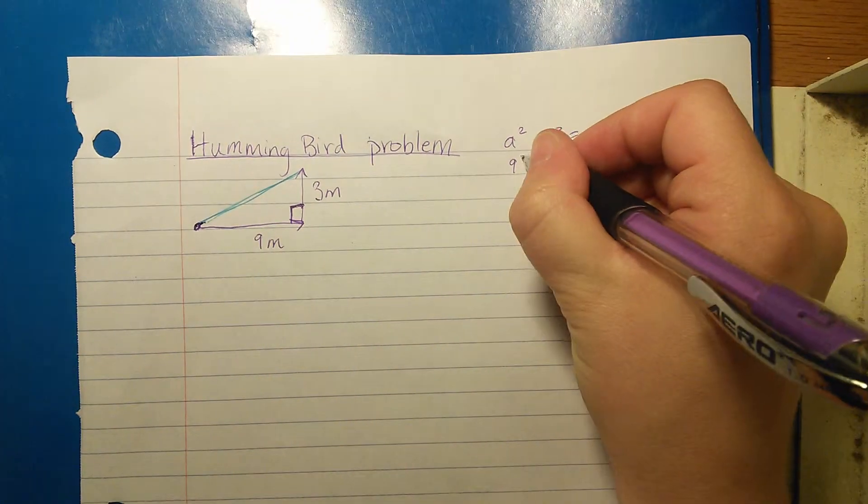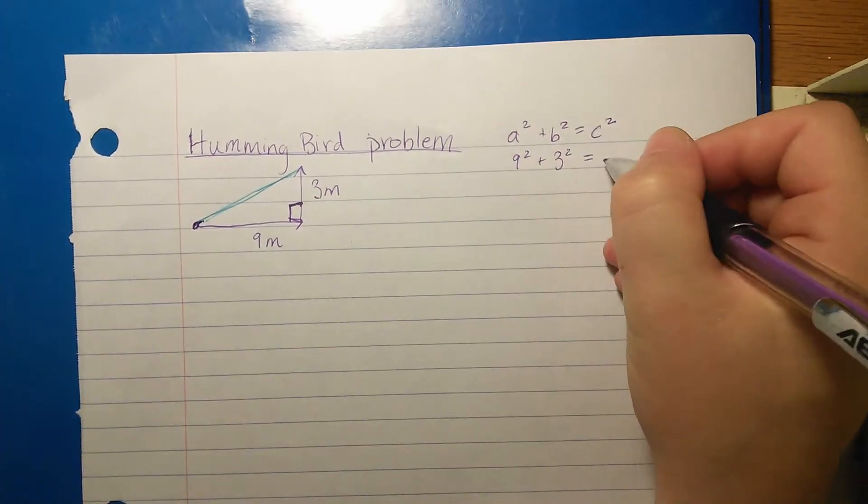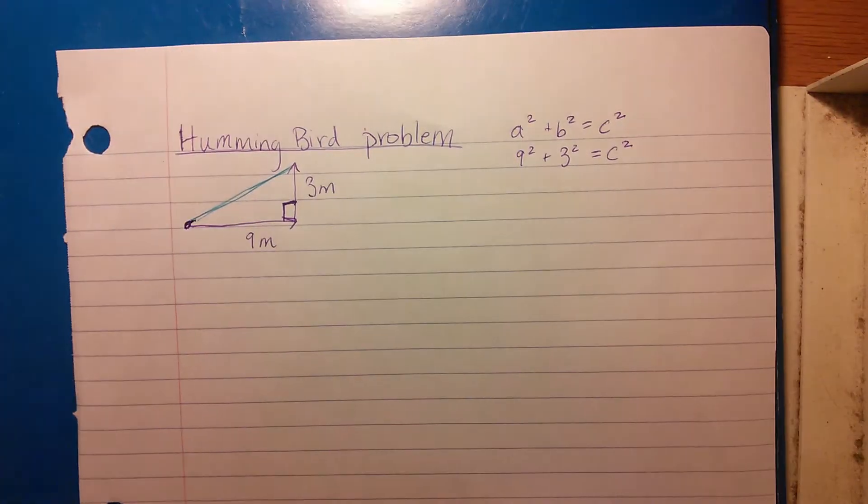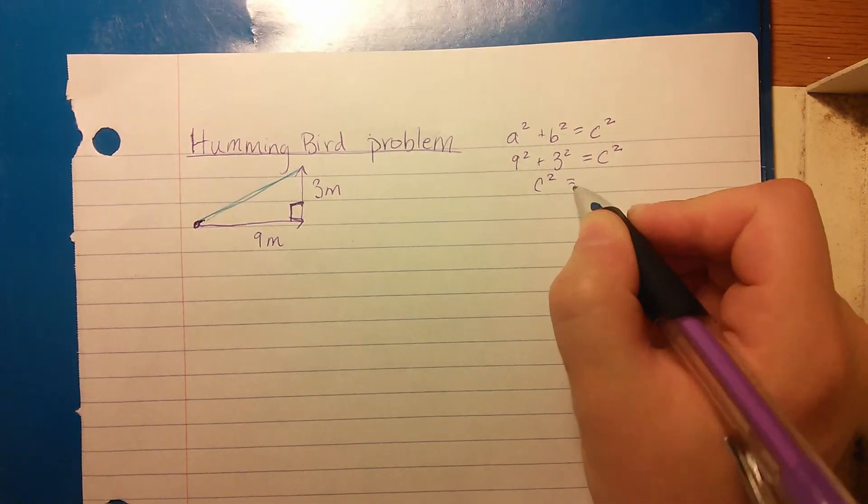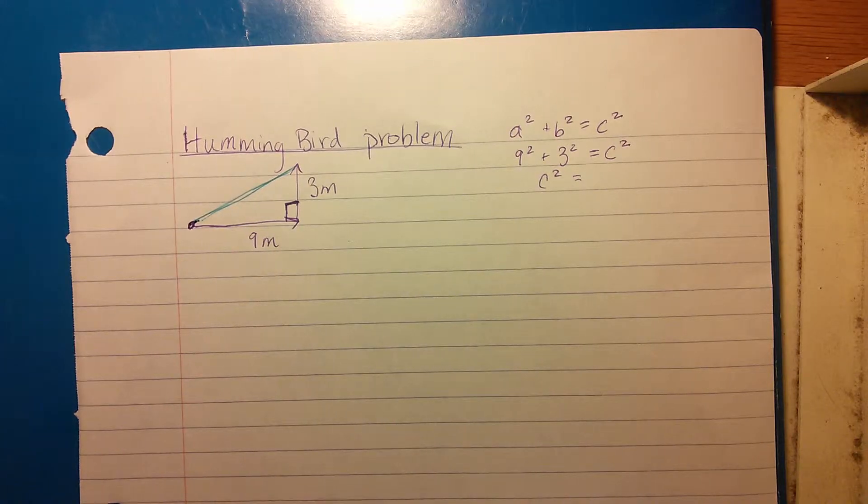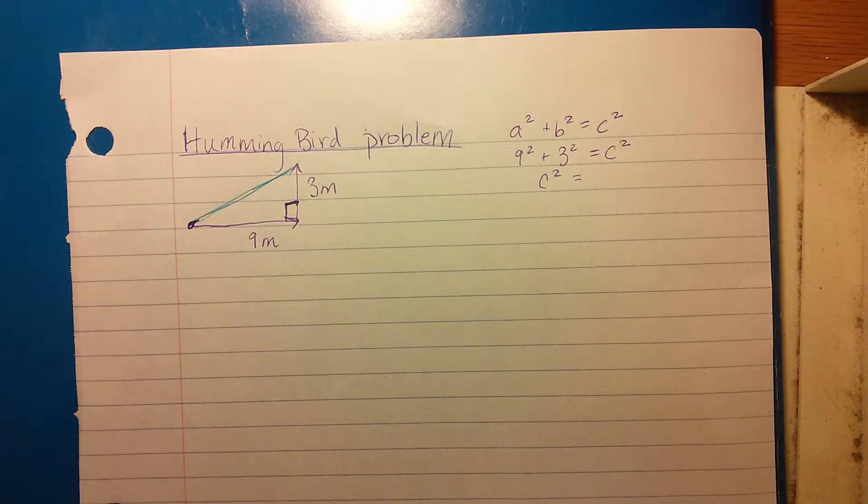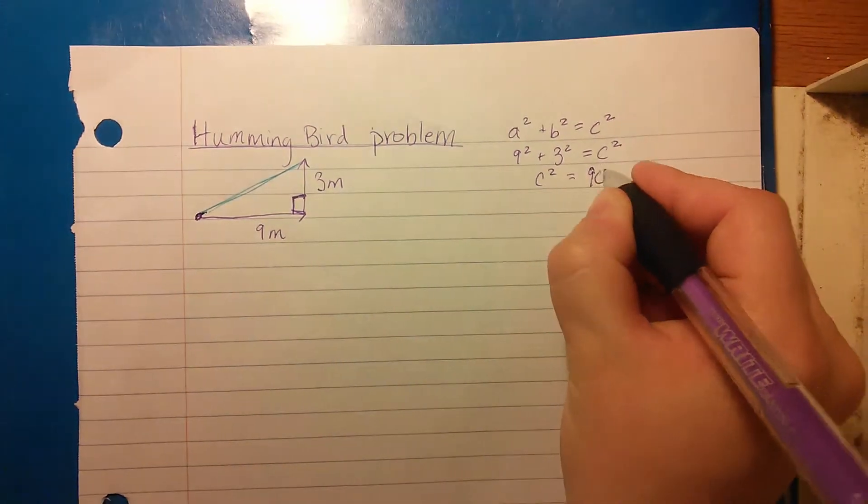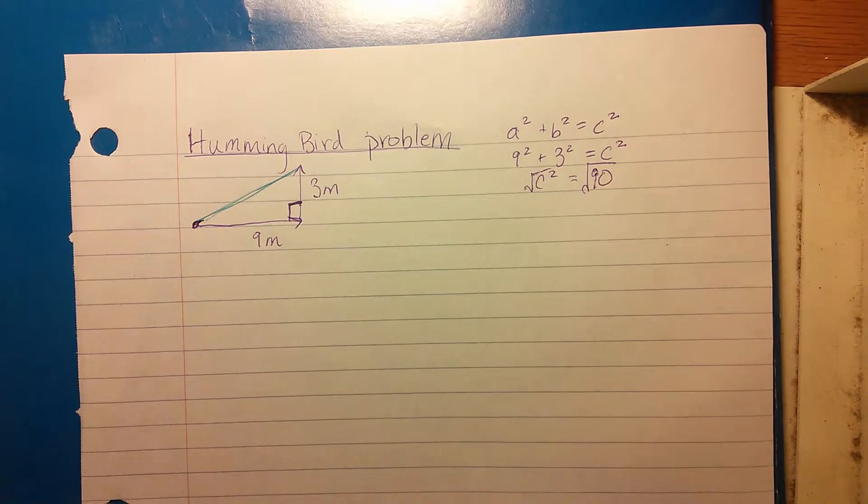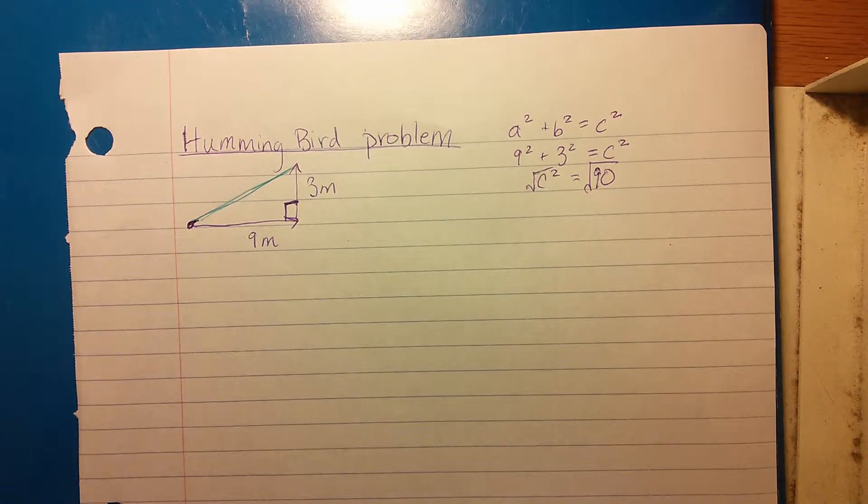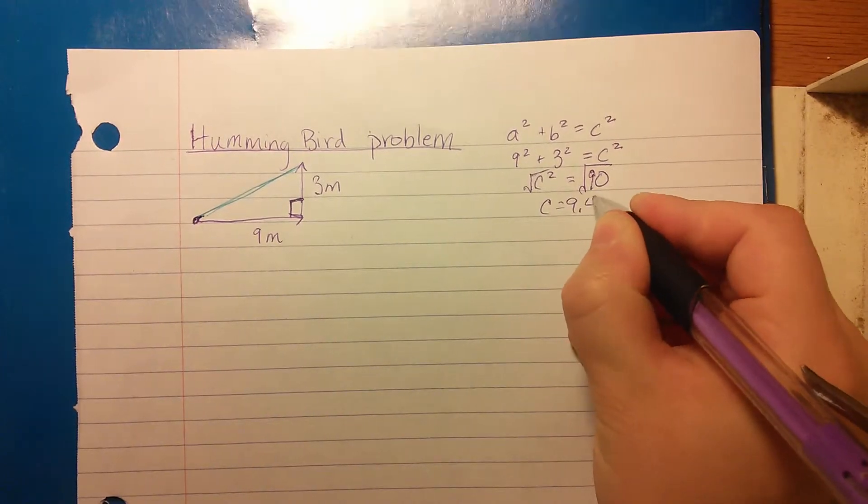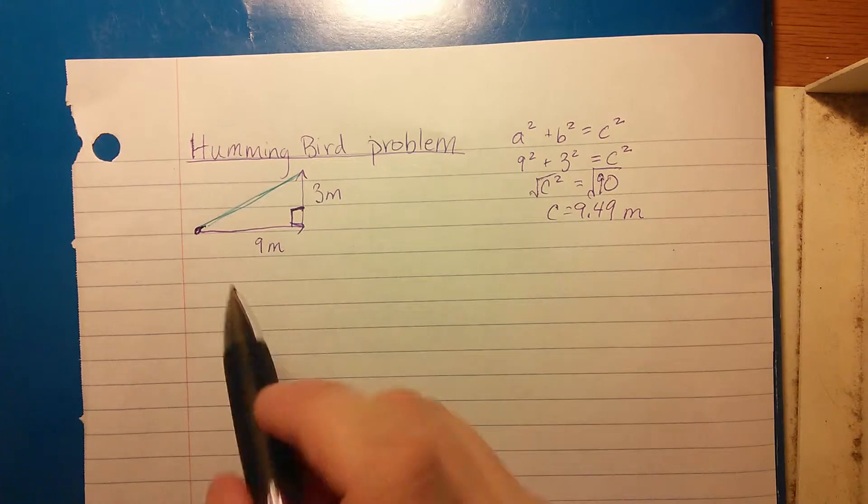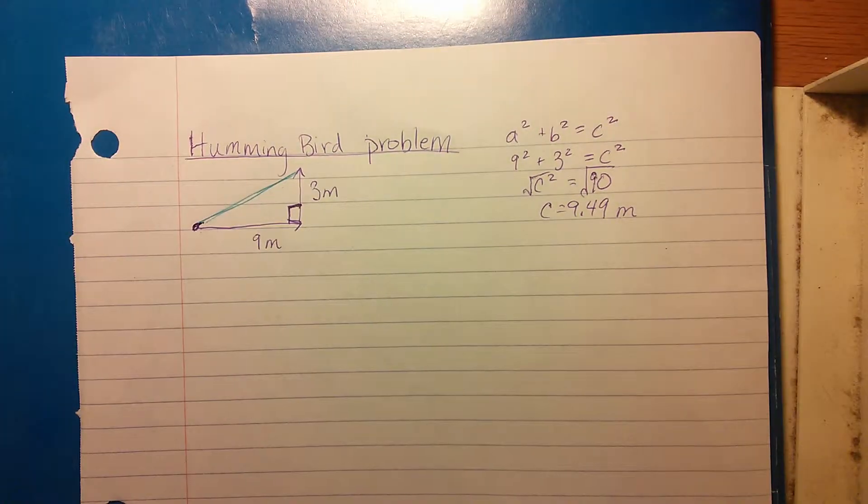So in this case we would be doing 9² + 3² = c². That ends up being c² = 81 + 9, which is 90. Then you take the square root of both sides and you get that c is equal to 9.49. Let's make sure we write our units. Our units are meters, so this length here is 9.49 meters.